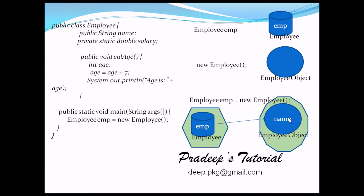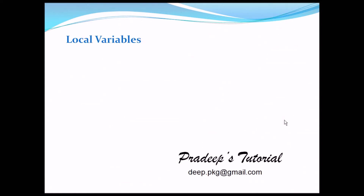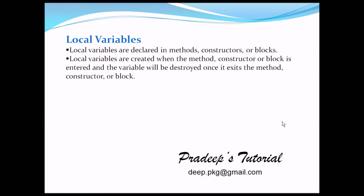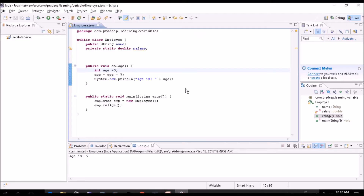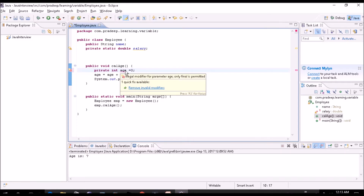Let's review local variables again. Local variables are declared in a method, constructor, or block. They are created when the method, constructor, or block is entered, and the variable is destroyed when it exits. Access modifiers cannot be used for local variables — if you try in Eclipse it gives an error: 'remove invalid modifier'. For local variables, we do not give any access modifier.